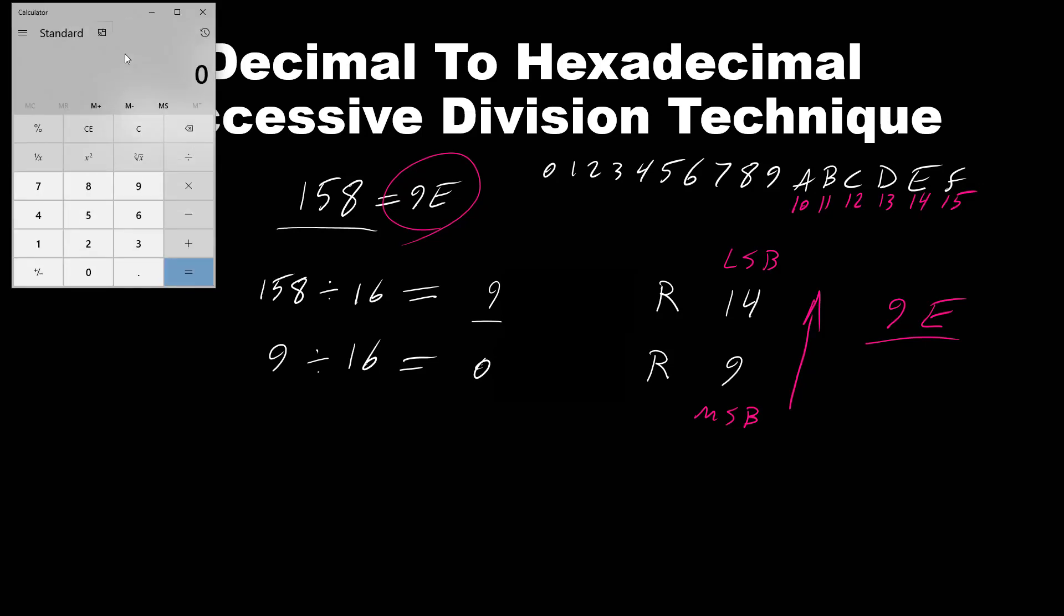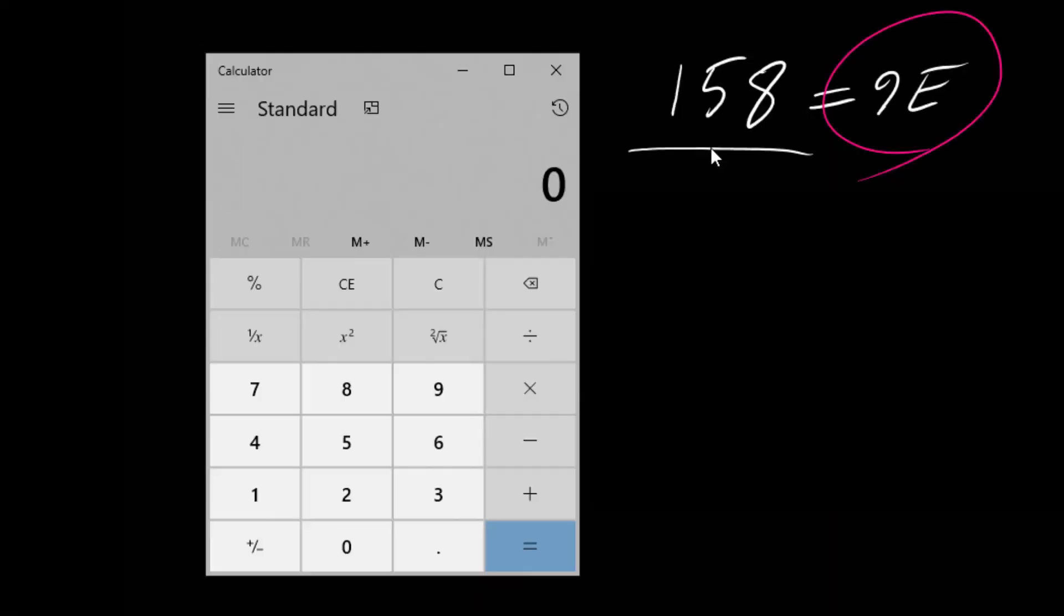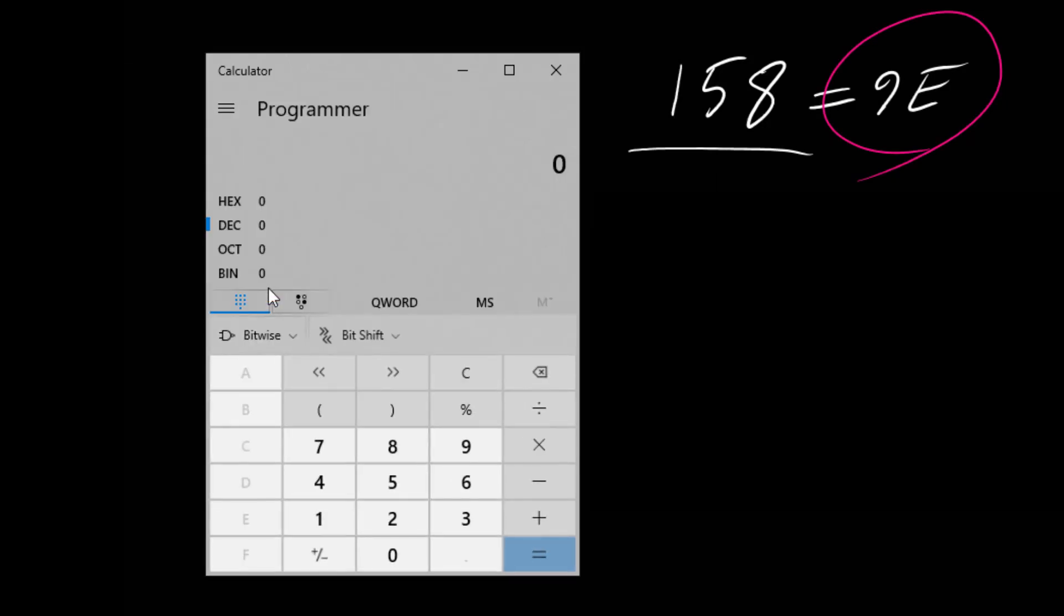Let's take a look using calculator, so we have decimal number of 158. Let's change the view to programmer, decimal is selected, 158, and here we can see for the hex is 9E.